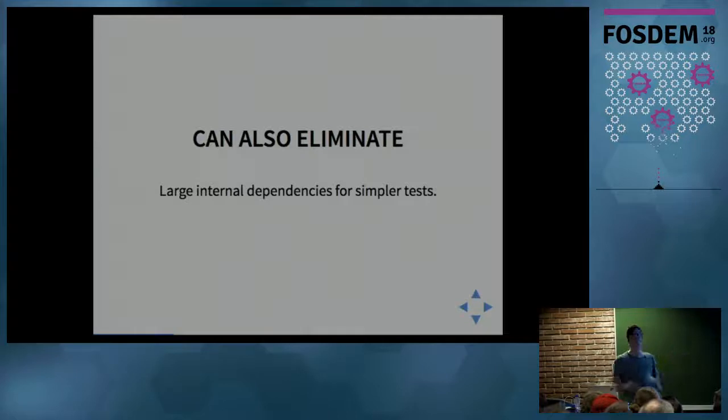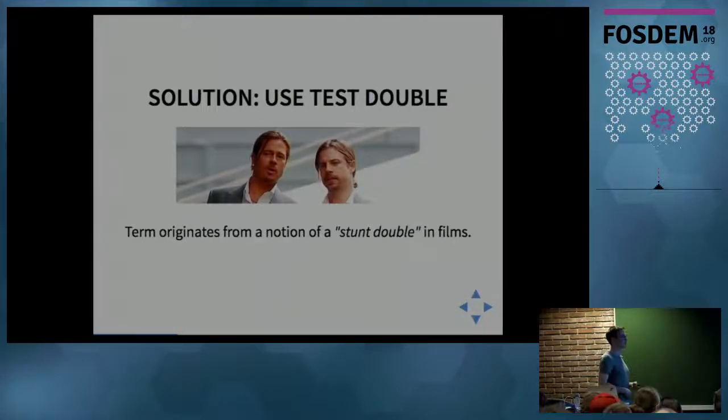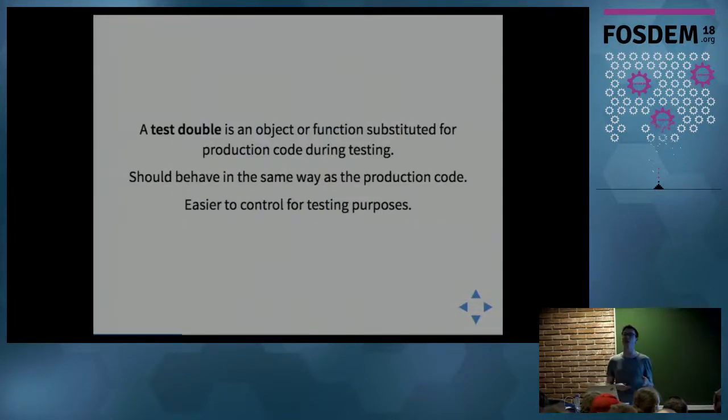The solution is to use the test double, and that comes from the notion of a stunt double in films. I'm surprised he managed to get away with being the stunt double of Brad Pitt. A test double is basically a replacement for any actual real production code that behaves the same way but is easier to set up.